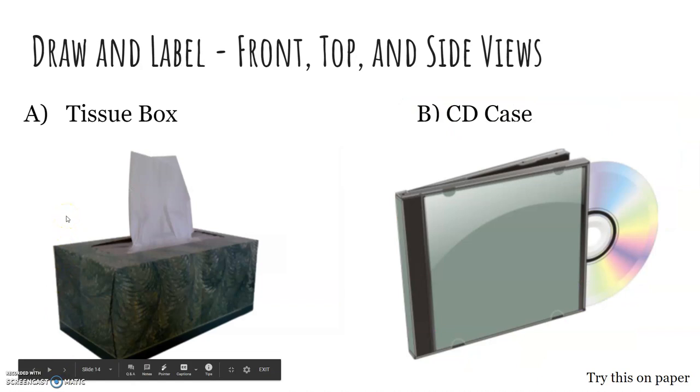Here are two examples. These are two objects that we'd like for you to try and draw the views for on a piece of paper, not on your laptop. So if you have your notebook, or you have just a piece of loose leaf, I want you to try and draw the front, top, and side views for the tissue Kleenex box and the CD case. If you're working on this right now, you can pause this video, because on the next slide, I'm going to show you the answers. I want you to give it a try before you watch the answers, please.